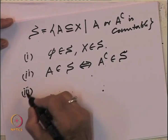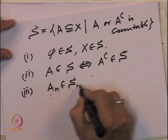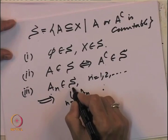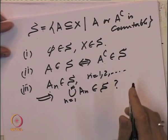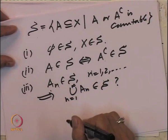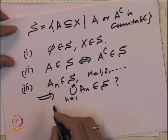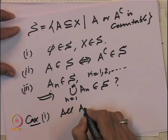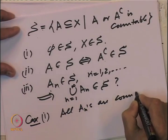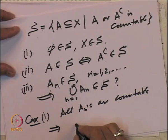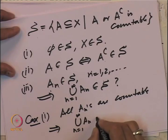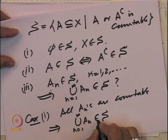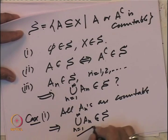Let us check that S is closed under countable unions: if Aₙ belongs to S for n = 1, 2, 3, ..., then the union ∪Aₙ from n=1 to infinity also belongs to S. We divide into cases. Case 1: all Aₙ are countable. Then their union is also countable — since a countable union of countable sets is countable — and hence the union belongs to S.